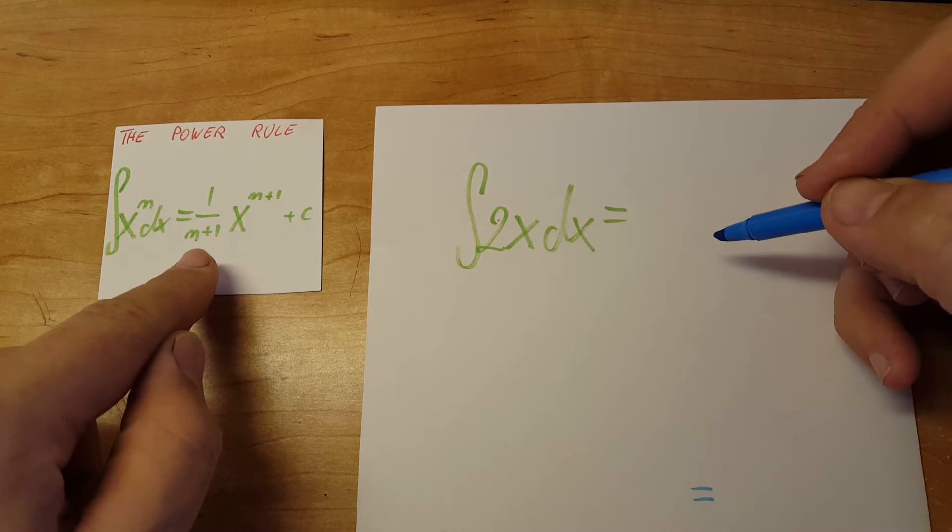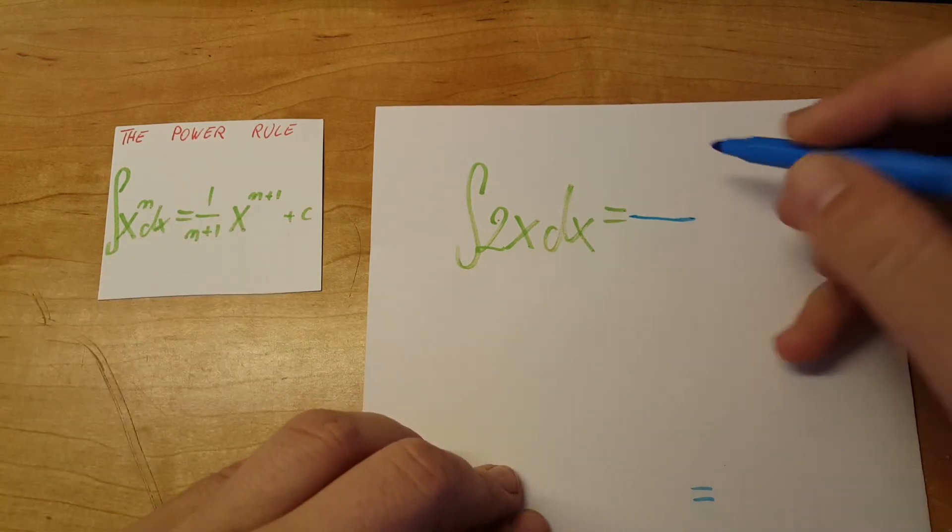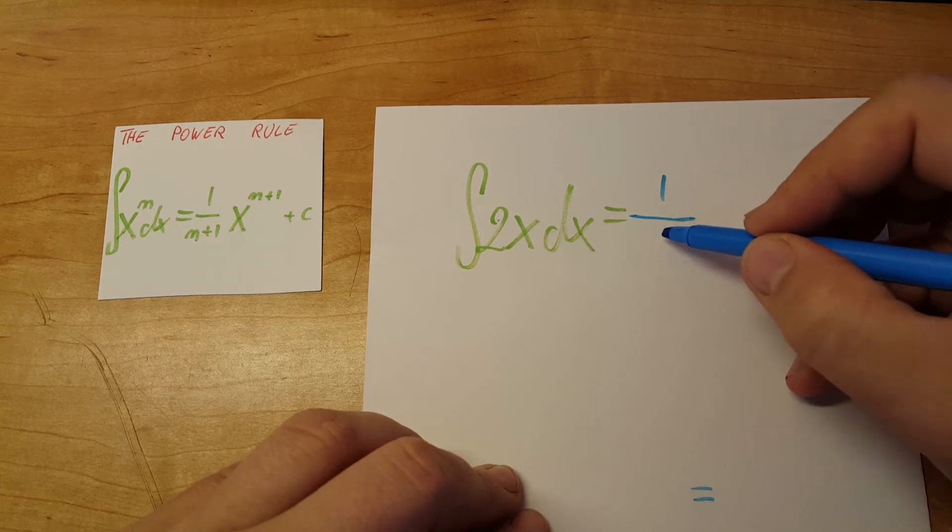Just like our formula says, one over n plus one. So let's start with that, one over n plus one.